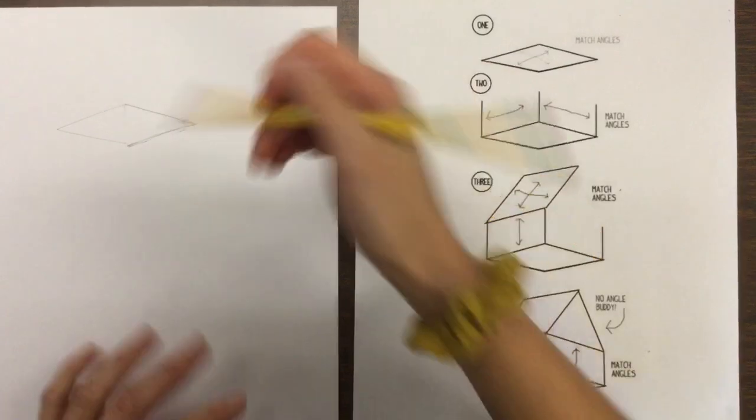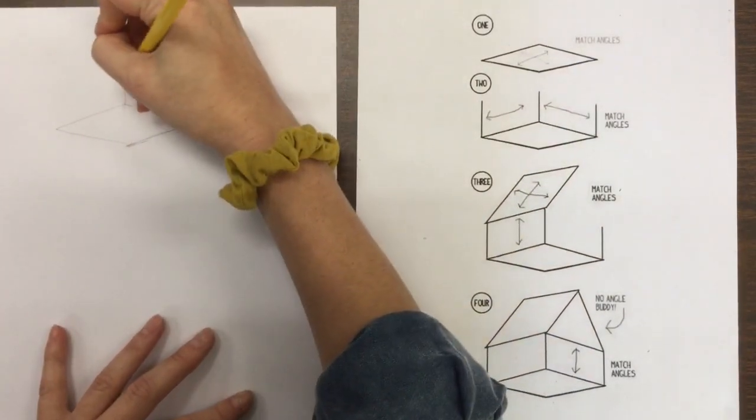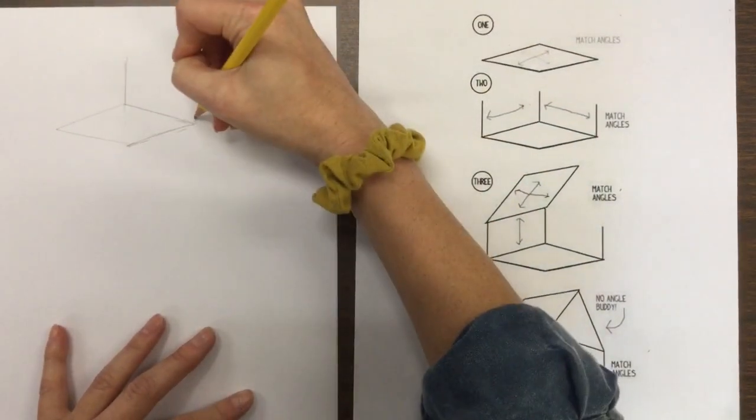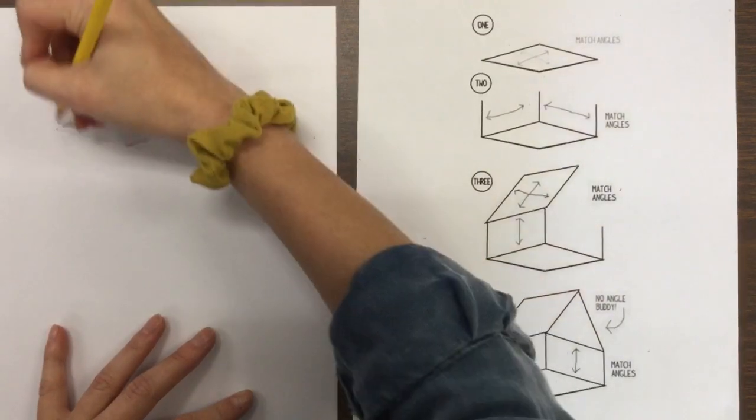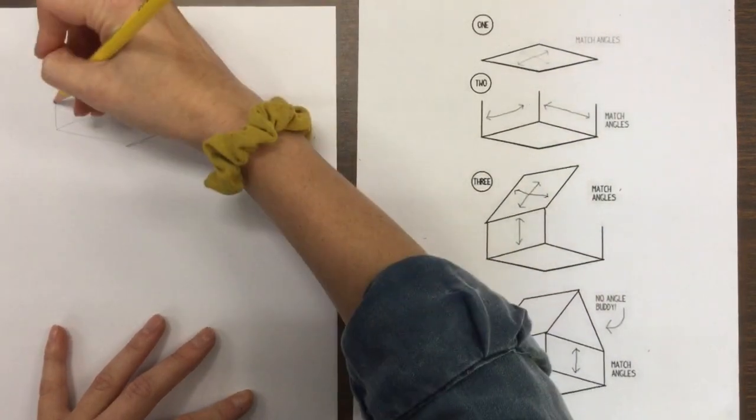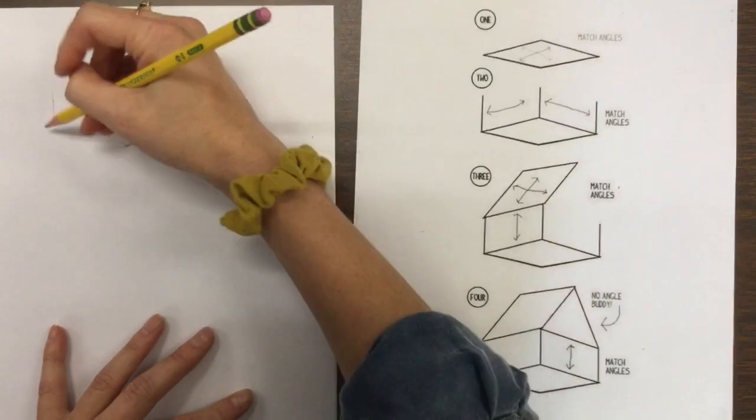Then we're going to make three lines coming up. The one in the middle is going to be the tallest. Then on the sides we have two shorter ones coming straight up. Make sure the ones on the sides are the same height.